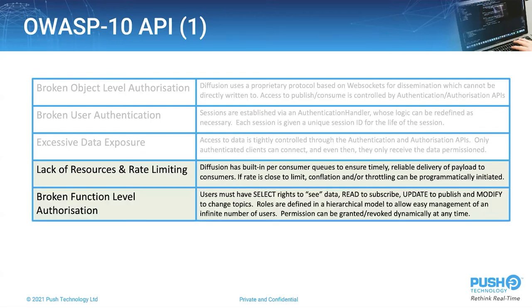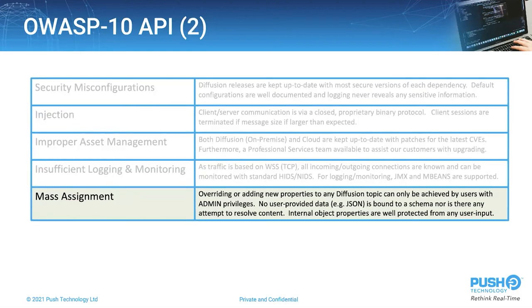Broken function level authorization: all roles are defined in a hierarchical model, all programmatically accessible for integration with your internal systems, and permissions can be granted and revoked at any time. The final one on API is mass assignments, where properties can be added or changed on objects. The only way that Diffusion topics can be modified is by users with admin privileges. There is no content bound to a strict schema, and internally any objects are well protected from user input, so there is no risk here whatsoever.